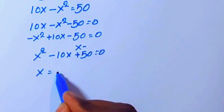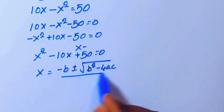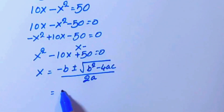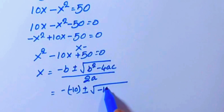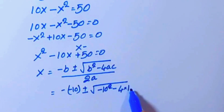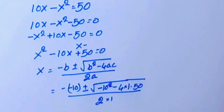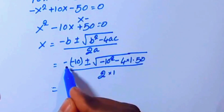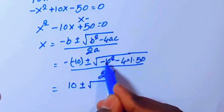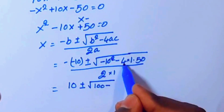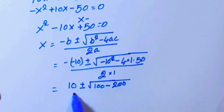Now we are going to find x using the quadratic formula: x equals minus b plus or minus square root of b squared minus 4ac, all over 2a. Here b is minus 10, so we have: 10 plus or minus square root of (minus 10) squared minus 4 times 1 times 50, all over 2 times 1. That gives us: 100 minus 4 into 50, which is 200, over 2.